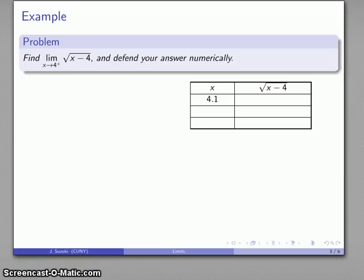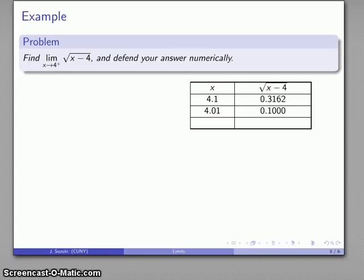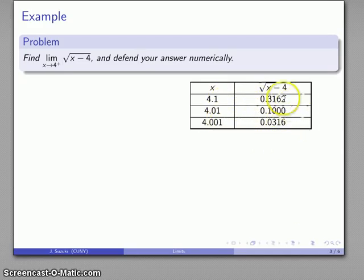I might try x = 4.01, which gives approximately 0.3162. Getting a little closer, x = 4.01 gives 0.1. Trying x = 4.001 gives approximately 0.0316. So for x values close to 4 but always staying a little bit more than 4, here are my function values.